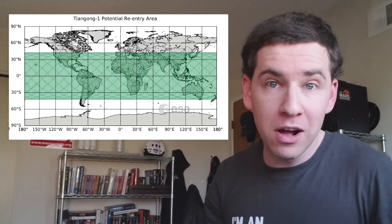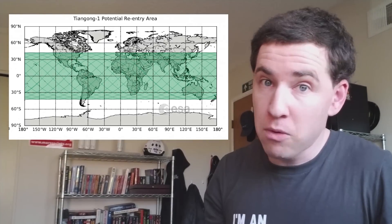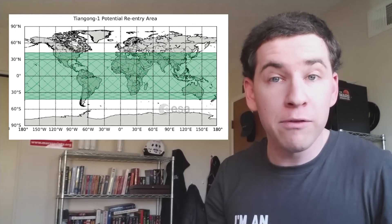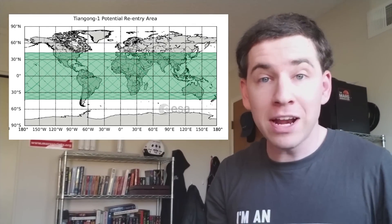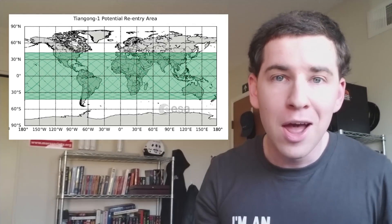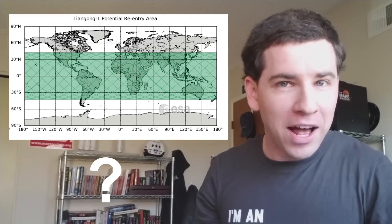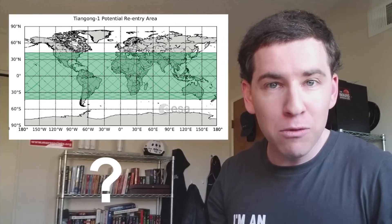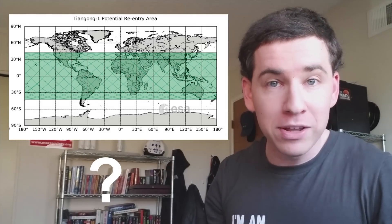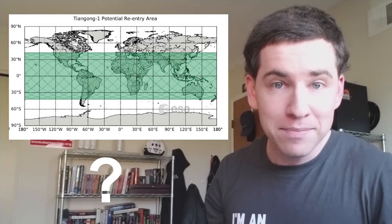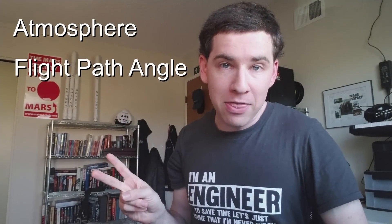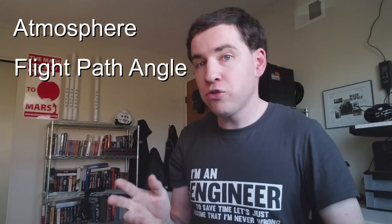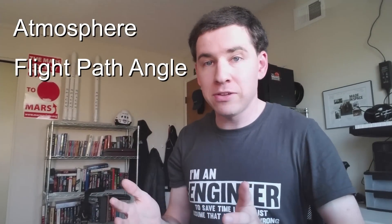If we know where Tiangong is right now — and we do — and if orbits can be projected so accurately — and they can — why isn't it possible to better nail down where Tiangong-1 is going to come in? Well, with Tiangong-1, it really comes down to two factors: the atmosphere and the flight path angle, and I want to illustrate the problem like this.